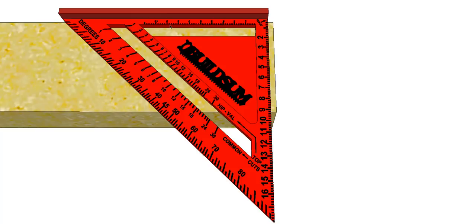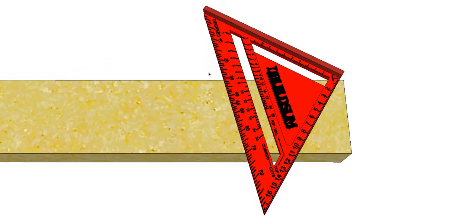The great thing about this square is you can use the pivot point here and pivot the square around until you get to one of these angles. So I've pivoted this around to 30 degrees. That means that if I draw a line from my pivot point across the timber, that will be a 30 degree angle.